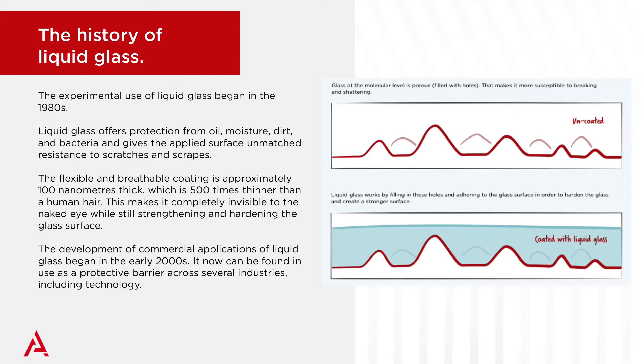The experimental use of liquid glass as a protective coating first emerged in the 1980s, when it was discovered that liquid glass offers protection from oil, moisture, dirt, and bacteria, and gives the applied surface unmatched resistance to scratches and scrapes.